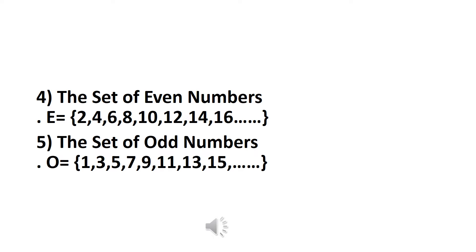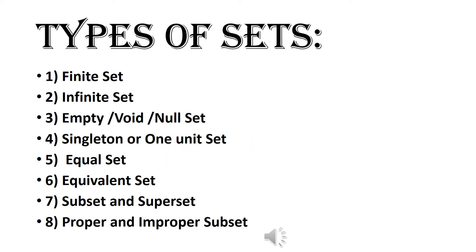Example 5: The set of odd numbers. Answer: O = {1, 3, 5, 7, 9, 11, 13, 15}.